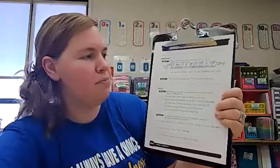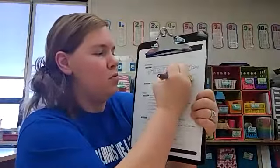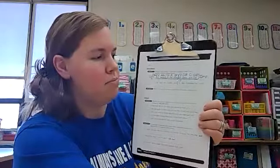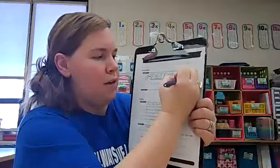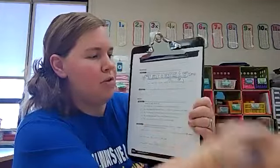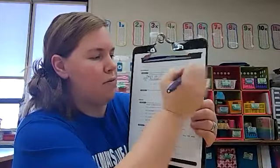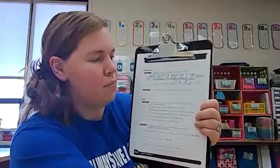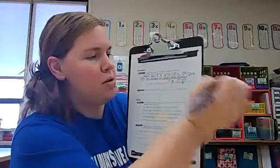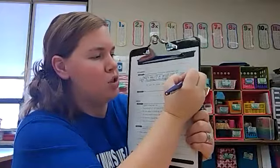Sentence number two says he and his friends went to the cafeteria for lunch. Looking for prepositions, I see the word to. To what? Cafeteria, object of the preposition. The is an article adjective. For. For is a preposition. For lunch, object of the preposition.